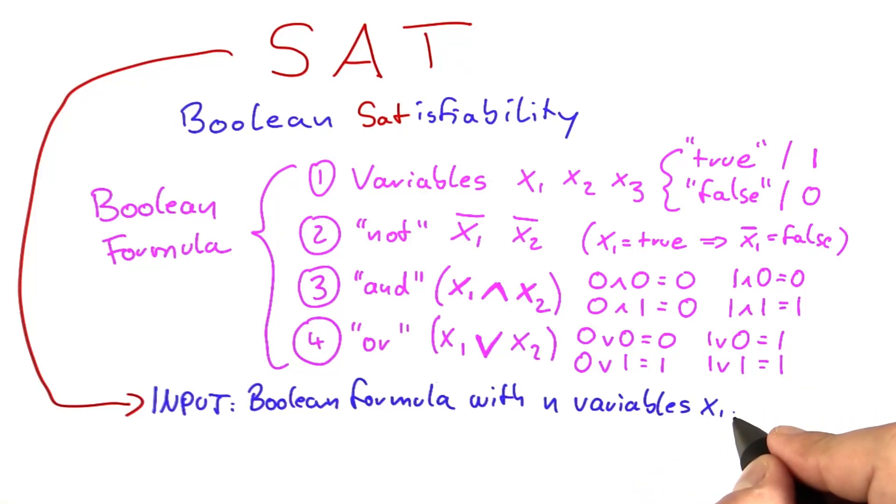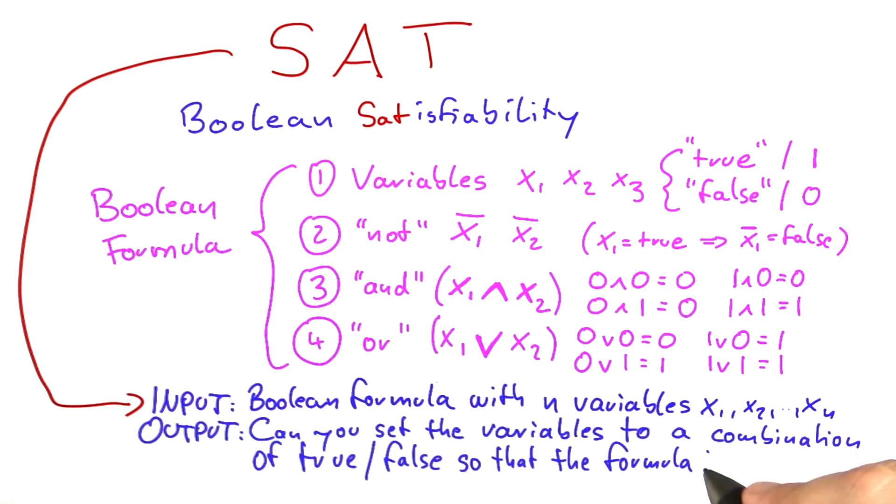So now that you know about Boolean formulas, what is the SAT problem? The SAT problem has as an input a Boolean formula with n variables, and I'm usually going to write them as x1, x2, and so on until you get to xn. And the output or question, since SAT is a decision problem, is the following.